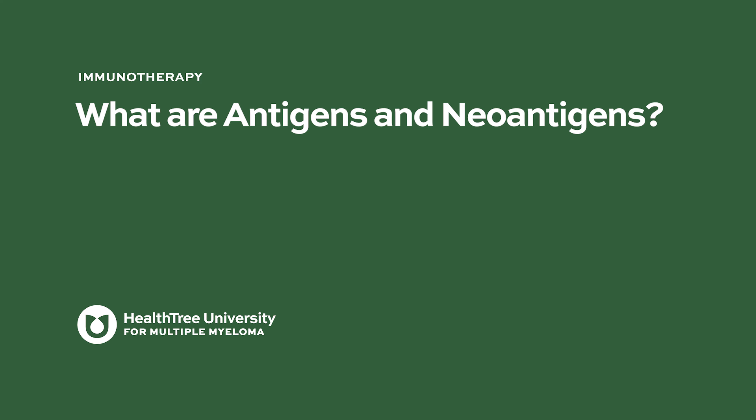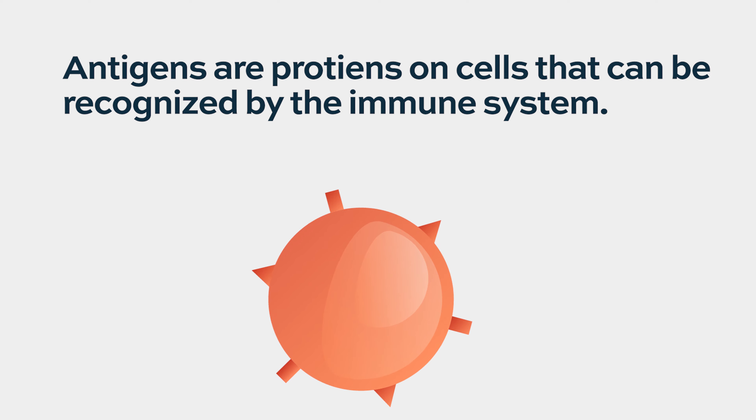What are antigens and neoantigens? In cancers in general, what we've come to understand is there are two types of proteins that can be recognized by the immune system. These proteins that can be recognized by the immune cells are called antigens.